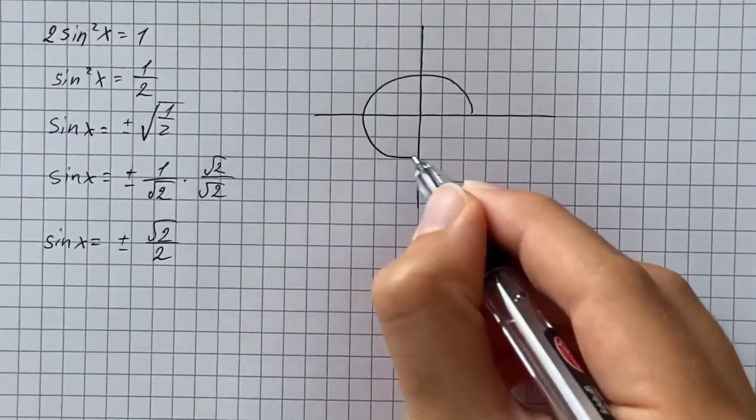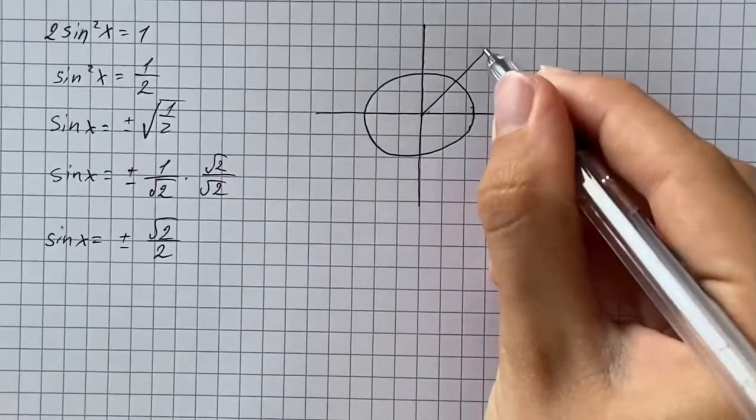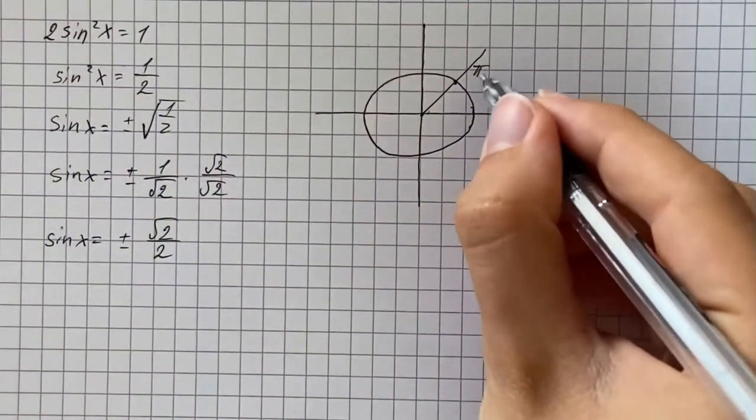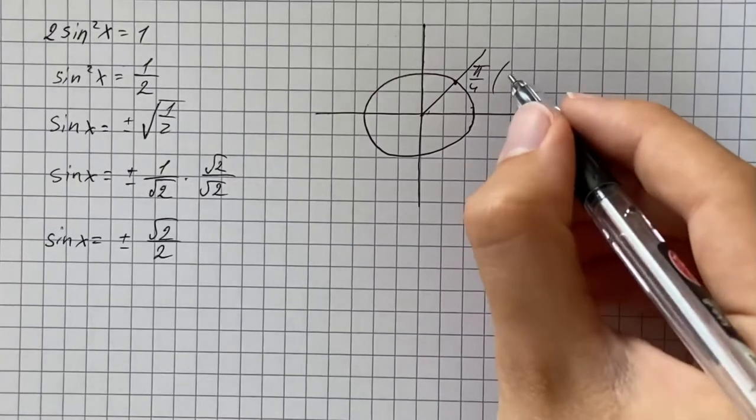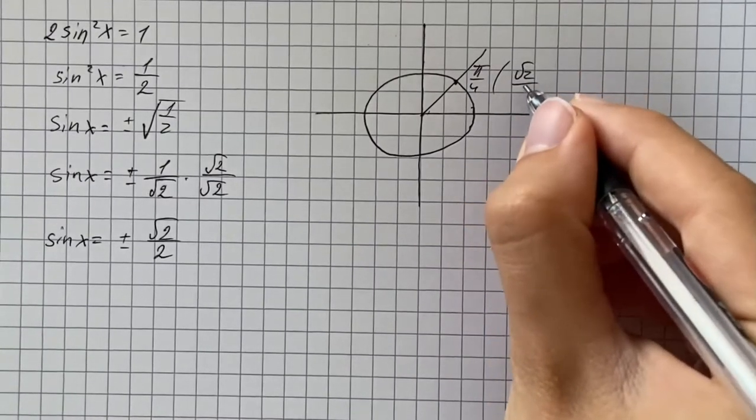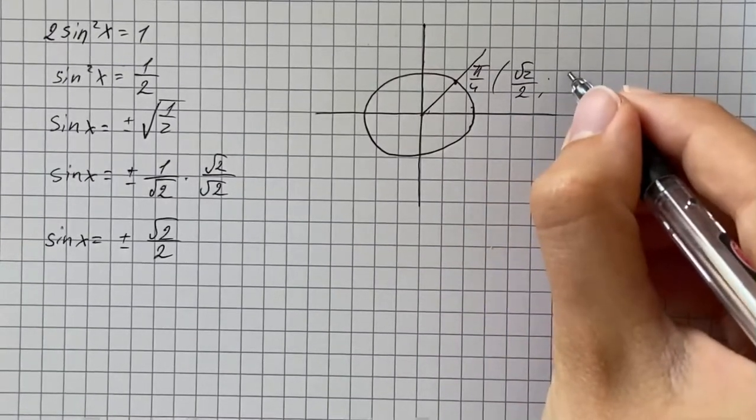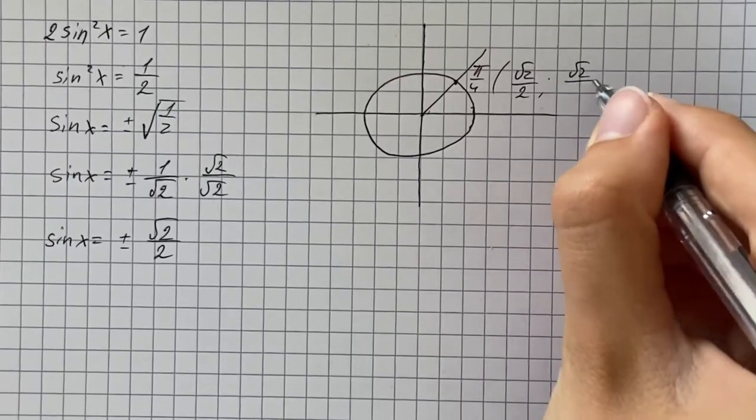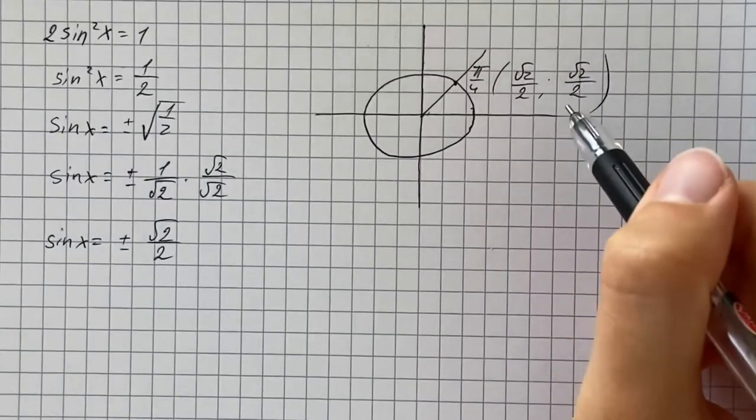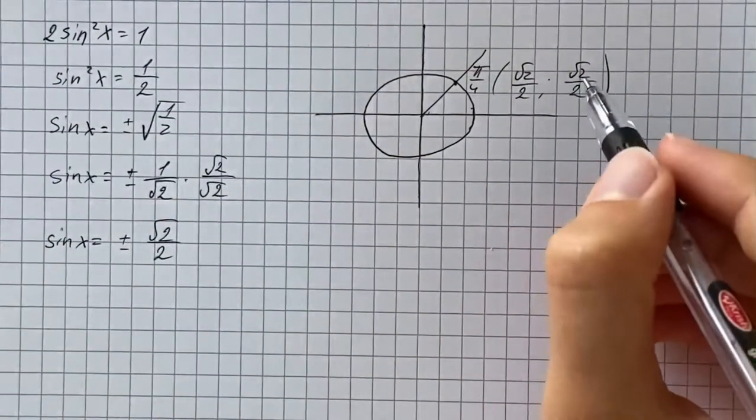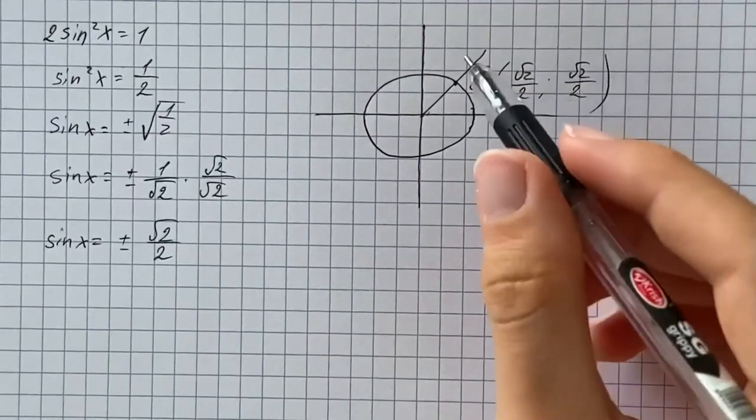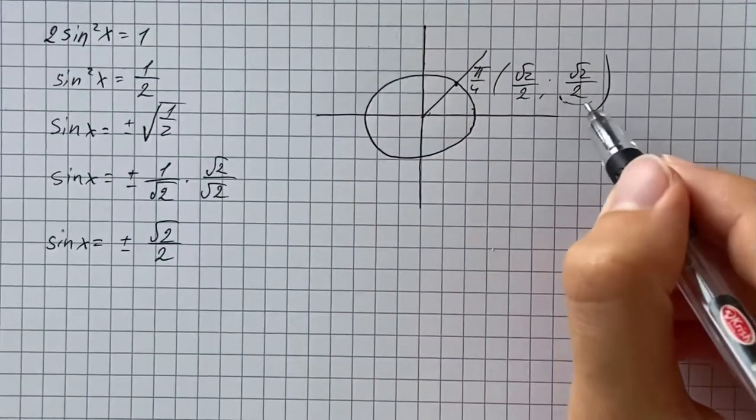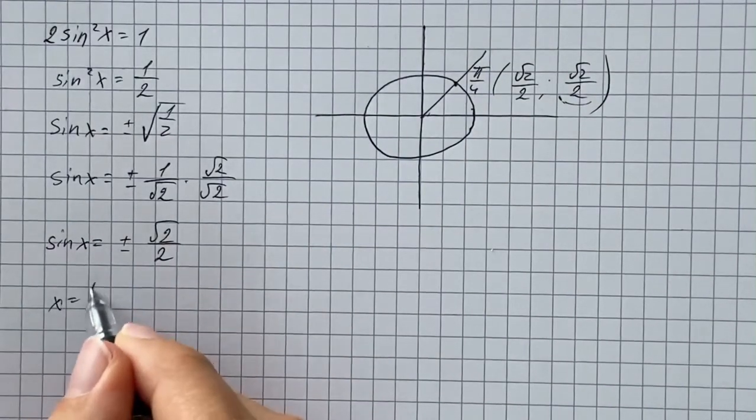And here at first we're going to consider angle pi over 4, which has coordinates square root of 2 over 2, comma, square root of 2 over 2. So they are the same, but we're going to consider the y-coordinate, because sine represents the y-coordinate. So that's going to be our first solution.